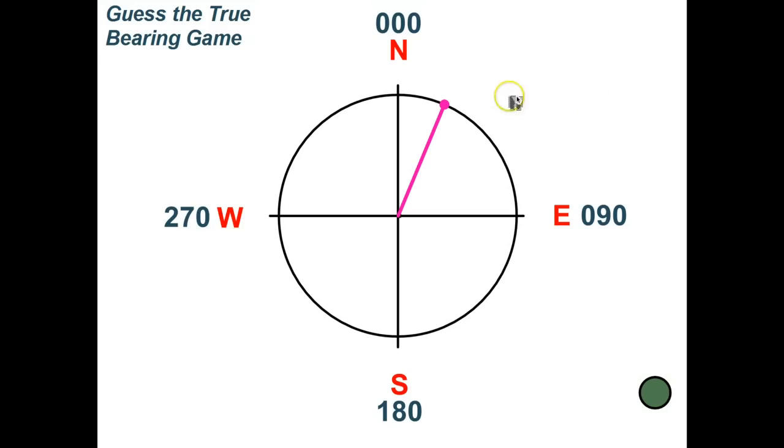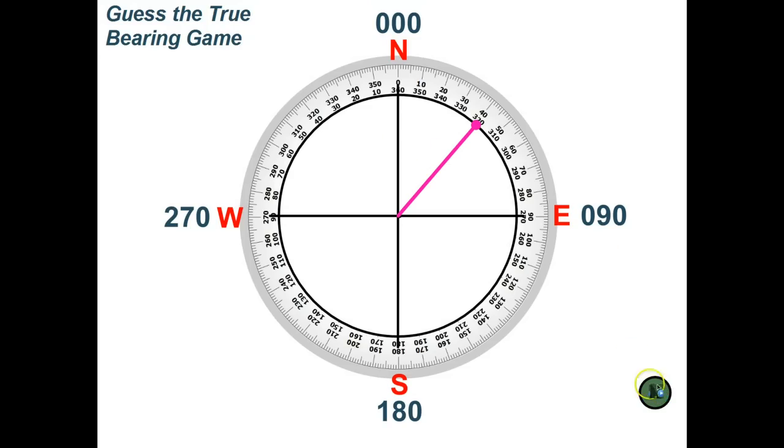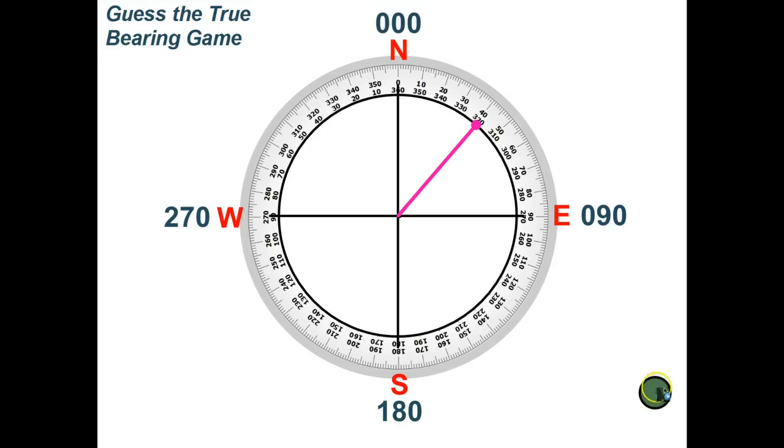Let's play a little game. We're going to play the guess the true bearing game. So, I'm going to give you an angle or a bearing. I want you to guess what it is, and then we can check it. In your head, try to guess what angle we have here between north and the pink line. Putting the compass over the top, that looks like it's about 41 degrees, or 041.